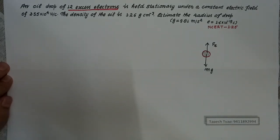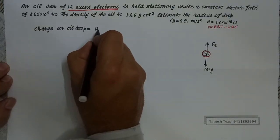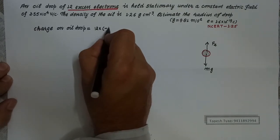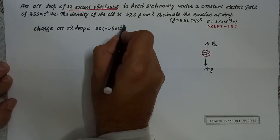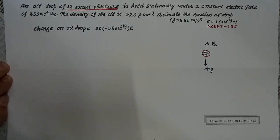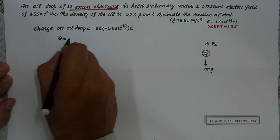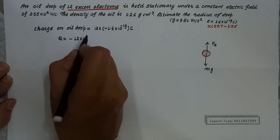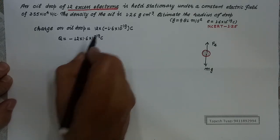So the oil drop carries a negative charge equal to the charge of 12 electrons. Charge on oil drop Q = 12 × (−1.6 × 10⁻¹⁹) coulomb. So this Q = −12 × 1.6 × 10⁻¹⁹ coulomb.